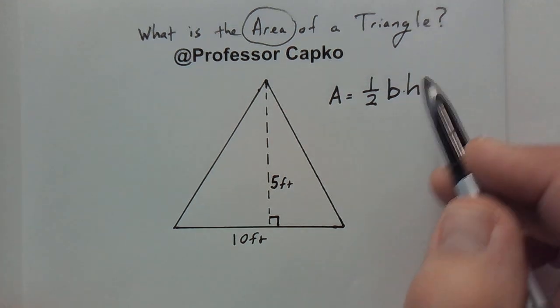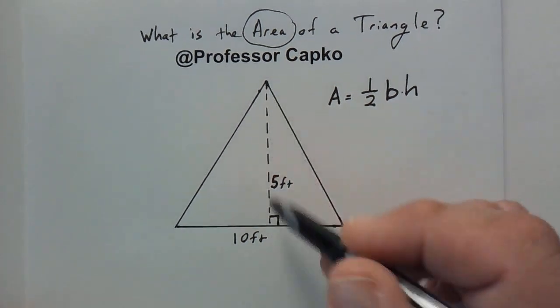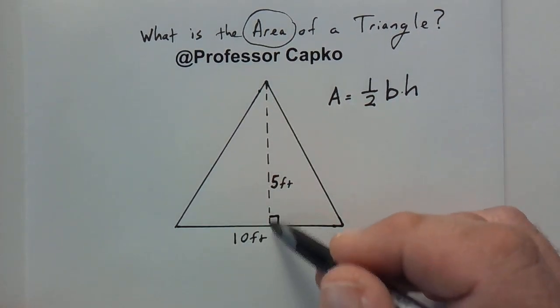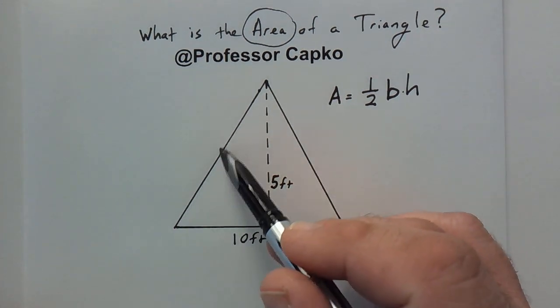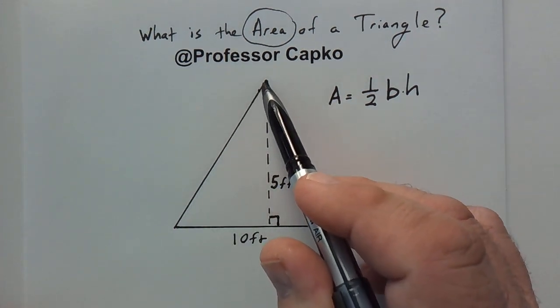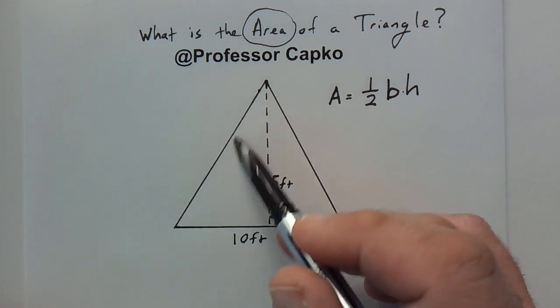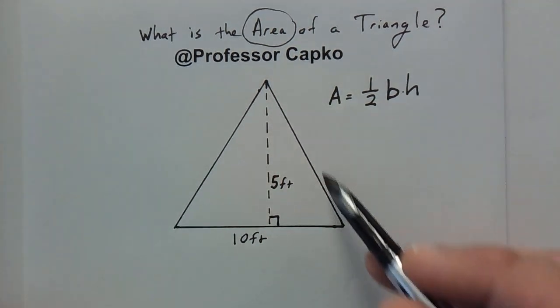The height is always perpendicular to the base. In other words, it's a 90 degree angle from the base. This over here is not the height, nor would this one be the height.